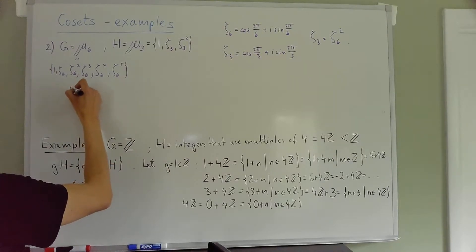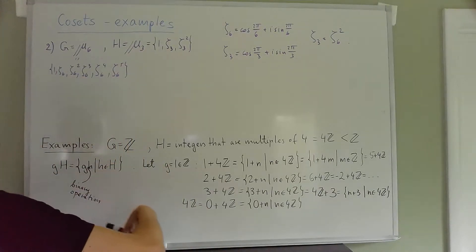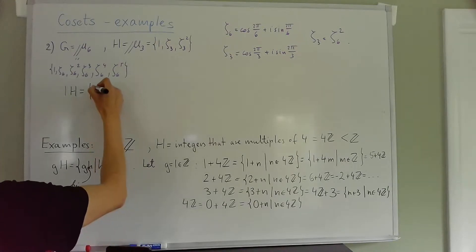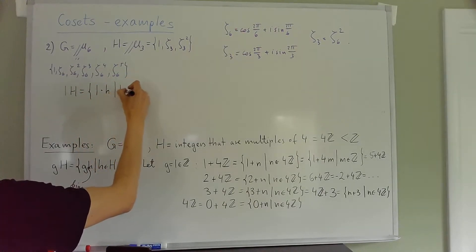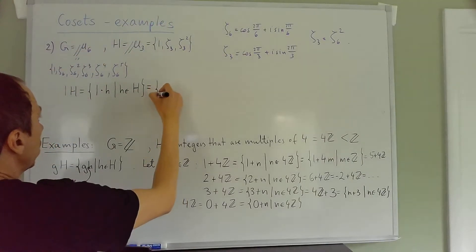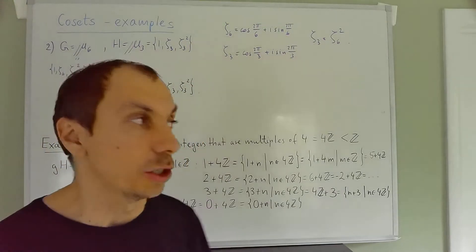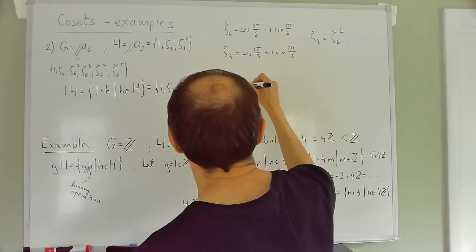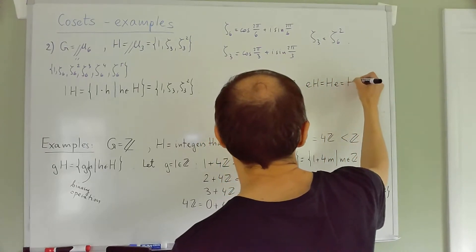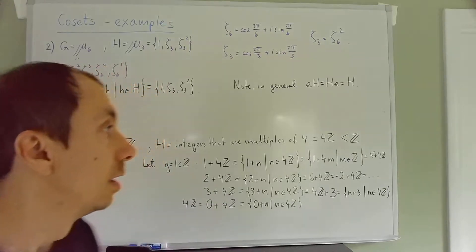Since the group is abelian, it's enough to look at left cosets. First, the coset 1·H: this consists of elements 1 times h for h in H, giving us 1, ζ₃, ζ₃². Note in general that eH = He = H — when you take the identity as a representative, you just get the subgroup itself.